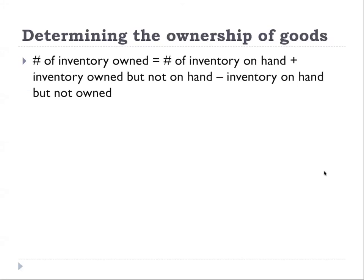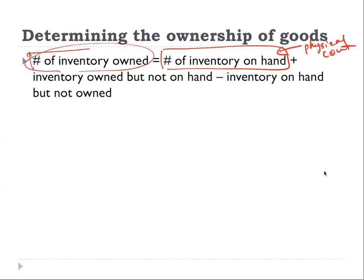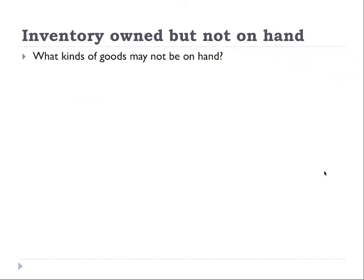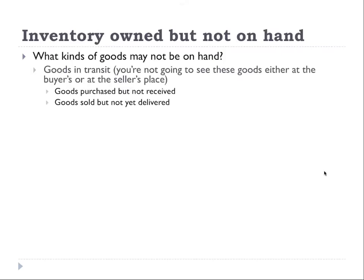The second step is to determine the ownership of goods. This is important because the number of inventory the firm has on hand doesn't necessarily equal the number of inventory the firm actually owns. Sometimes the firm may have inventory it owns but not on hand, and sometimes the firm may have inventory on hand but not own it. So what kind of goods might a firm own but not have on hand?